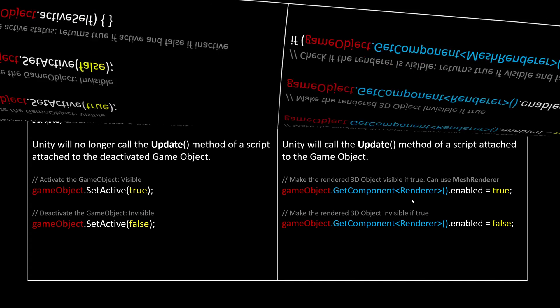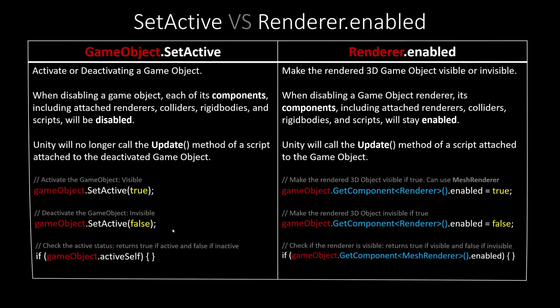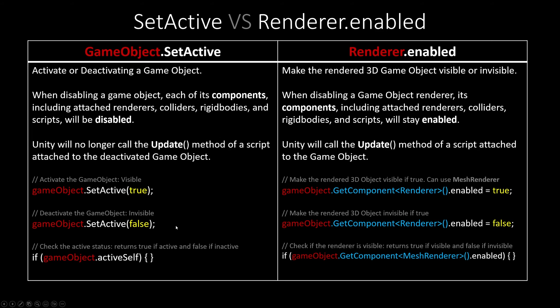To check whether a game object is active, use this form of code: gameObject.activeSelf. If it returns true, then the game object is active using the setActive method. If it returns false, then the game object is inactive and invisible.